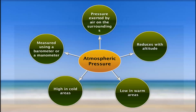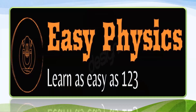Hope today's topics are very clear. Let's have a quick summary: atmospheric pressure is the pressure exerted by air on the surroundings; a barometer or manometer can be used to measure it; atmospheric pressure reduces with altitude; and in cold areas atmospheric pressure is high while in hot areas it is low. Hope you all understood the basics of atmospheric pressure and enjoyed this topic. Thank you for watching — have a great day ahead.